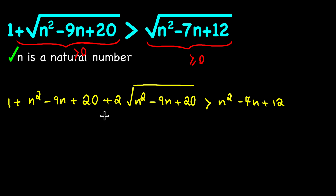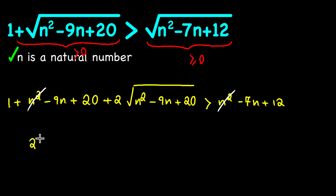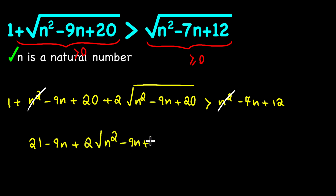Now we can say that this n squared and this n squared will cancel each other, so we will be left with 21 minus 9n plus 2 times the square root of n squared minus 9n plus 20.